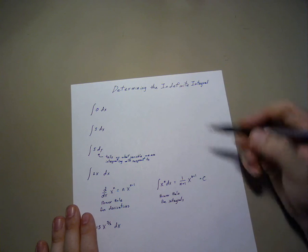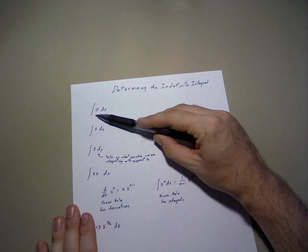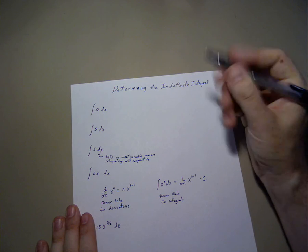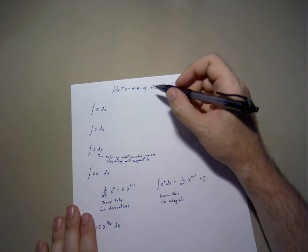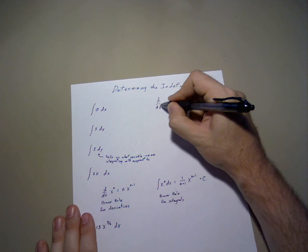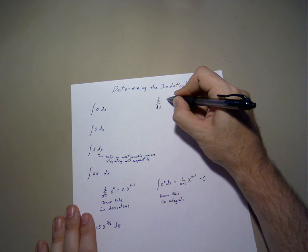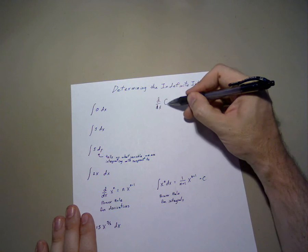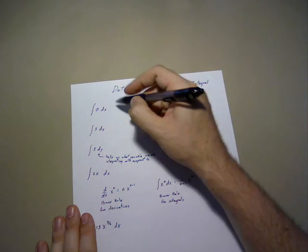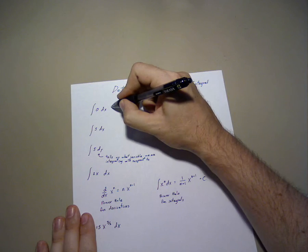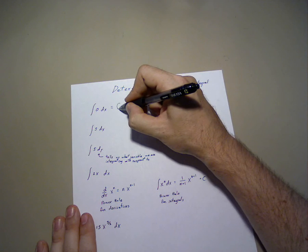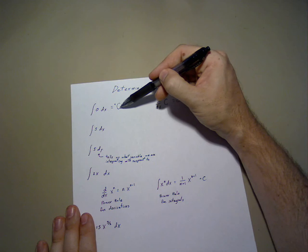To begin with, we'll start with the integral of 0 dx. Now, to solve this, we remember that the derivative of a constant, some constant c, doesn't matter what c is, as long as it's a constant, is 0. We therefore can say that the integral of 0 is some constant plus c.